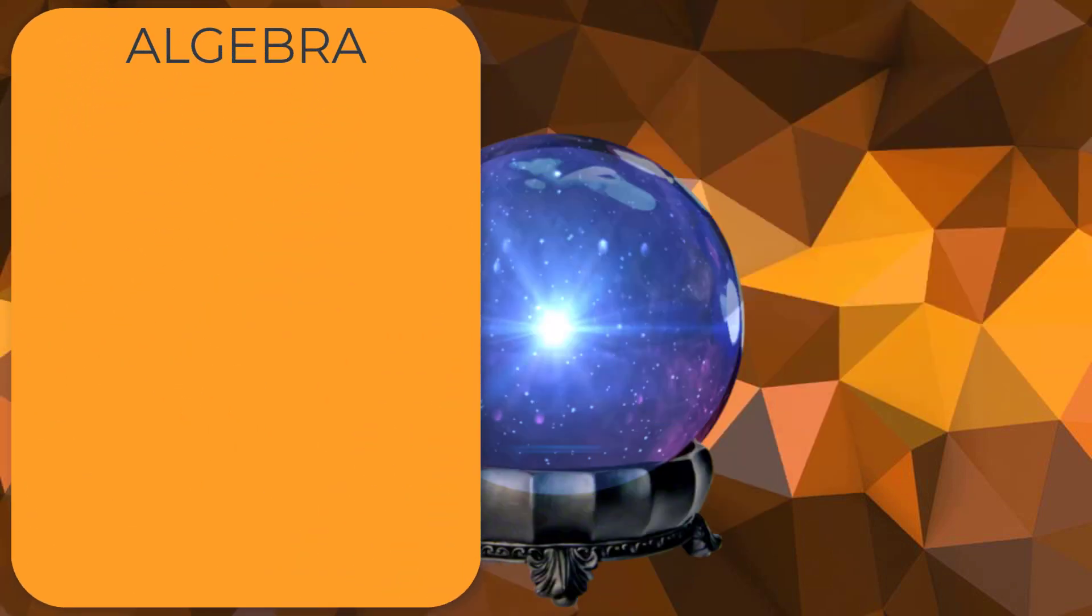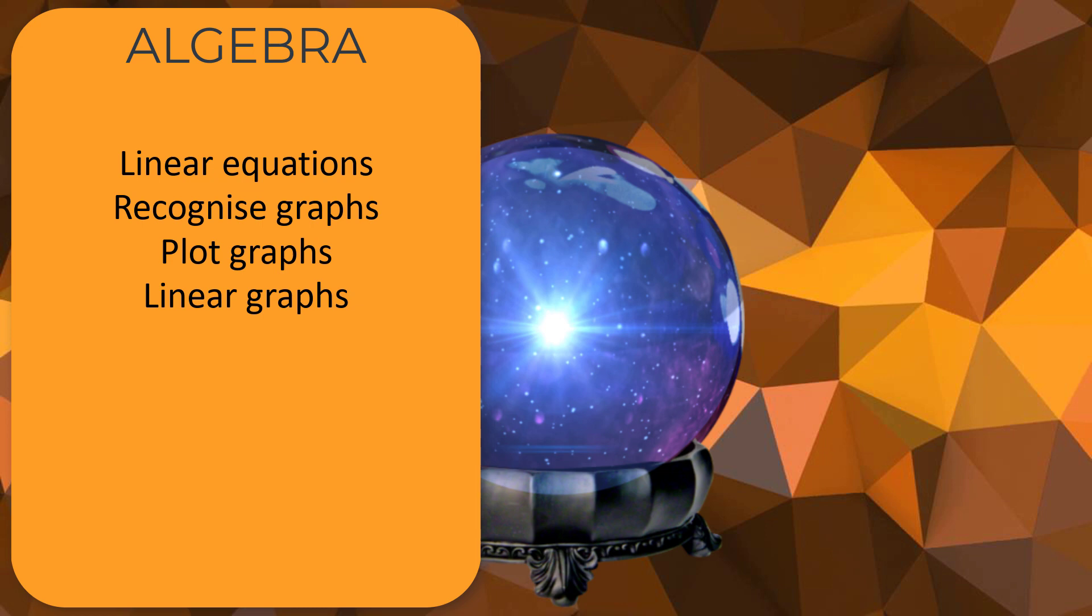Moving on to algebra, and first up we've got linear equations. So can you solve a linear equation with unknowns on one or both sides? You need to rearrange, don't you? So you have to get x by itself and then you'll find your answer. Recognizing graphs. Do you know the difference between a linear graph and a quadratic and a cubic? Could you identify them if I gave you a graph? Would you recognize which was which? Can you plot graphs? Now it mentions linear graphs here, so I think it's going to be plotting a linear graph rather than a quadratic. So the easiest way is to create a table of values, isn't it? And then sub your x values into the equation one after the other until you've found all the y values, and then you can plot those points on the graph.